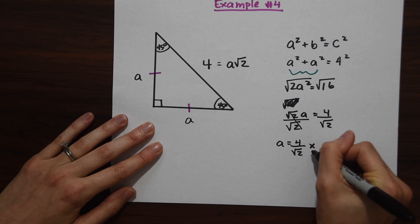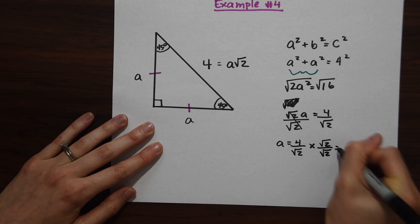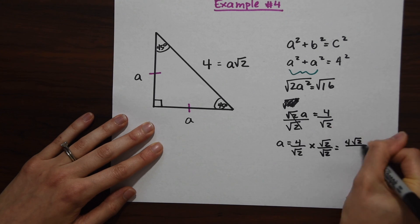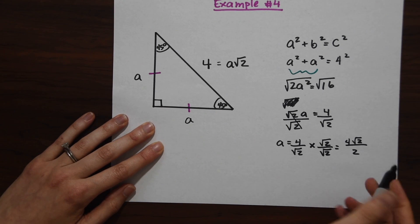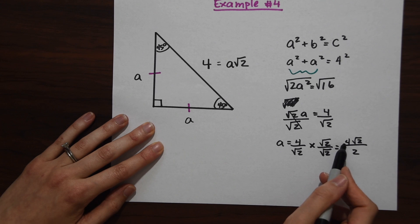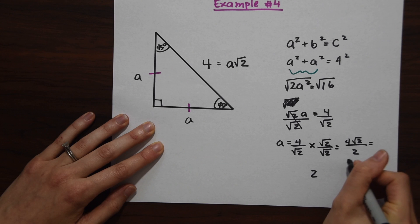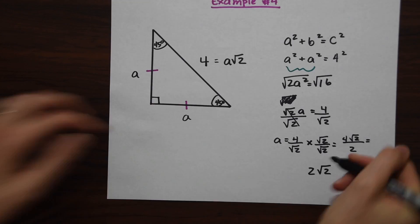This gives us 4 radical 2 all over 2. We could leave the answer like that, or we can realize that we could simplify it even more because we can divide 4 divided by 2. When we do that, we get 2, this becomes 2, and then we're just left with radical 2 as our answer.